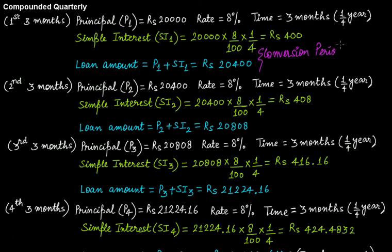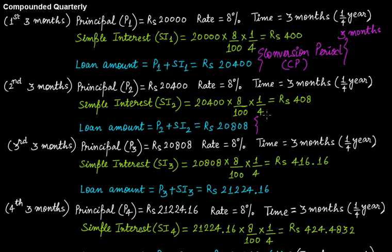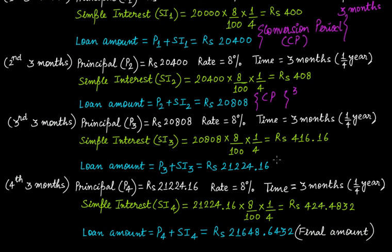For quarterly compounding, the conversion period occurs after every three months. Conversion period is three months; for semi-annual it was six months; for annual it is one year. For the second three-month period, you take the new principal, calculate interest again, and find the loan amount — this is another conversion period. Similarly, after the third period of three months you get another conversion period.